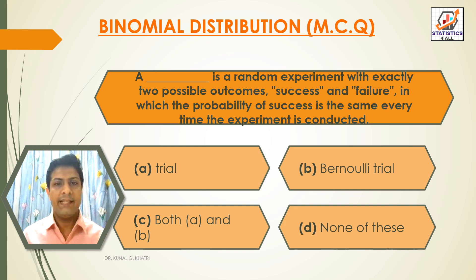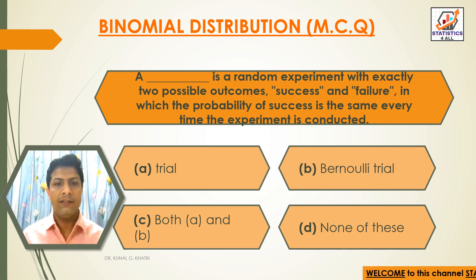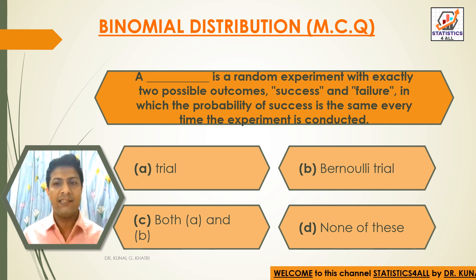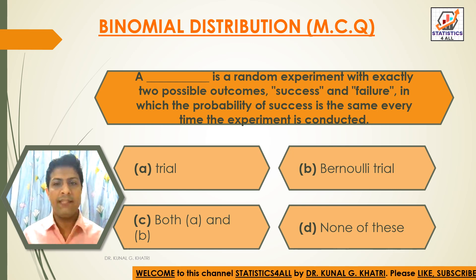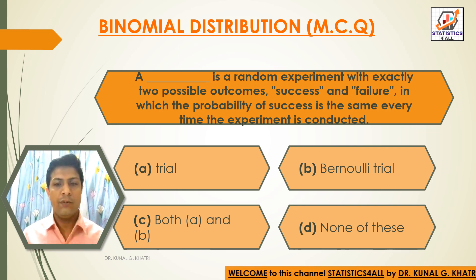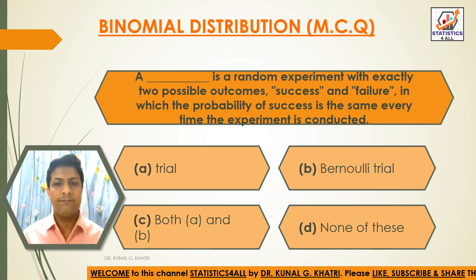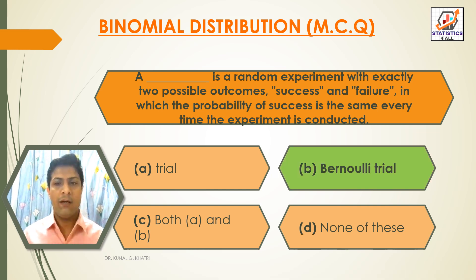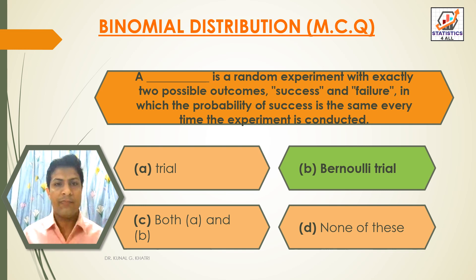Next question: A dash is a random experiment with exactly two possible outcomes — success and failure — in which the probability of success is the same every time the experiment is conducted. Option A: Trial. Option B: Bernoulli trial. Option C: Both A and B. Option D: None of these. The answer is option B — Bernoulli trial.